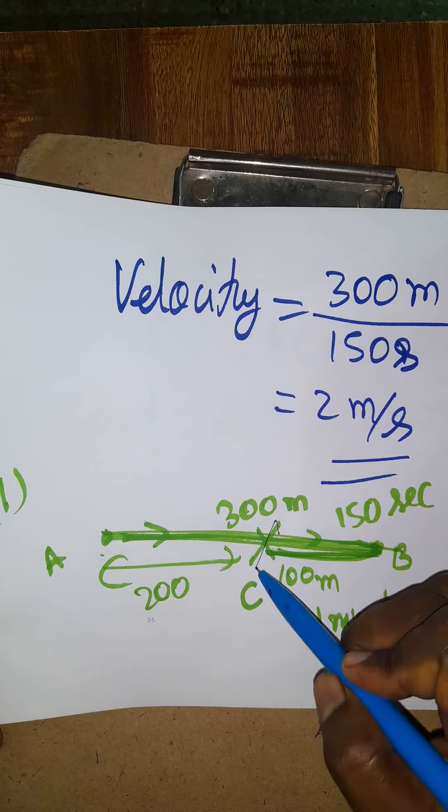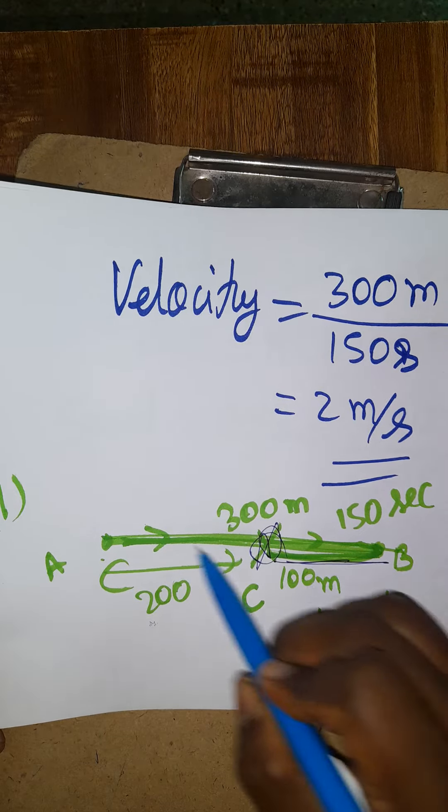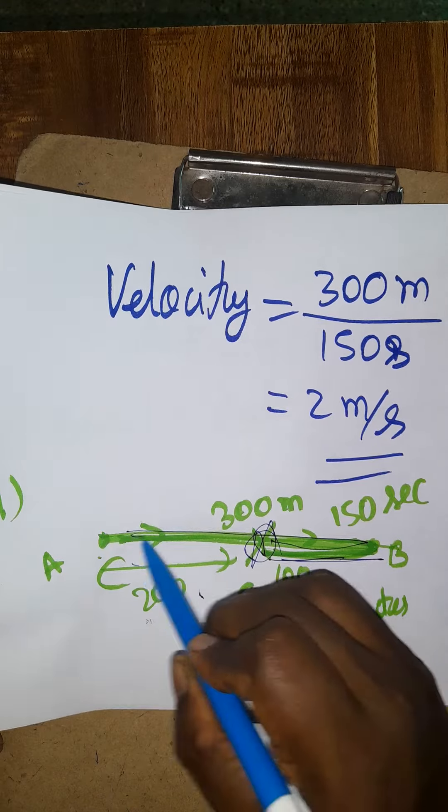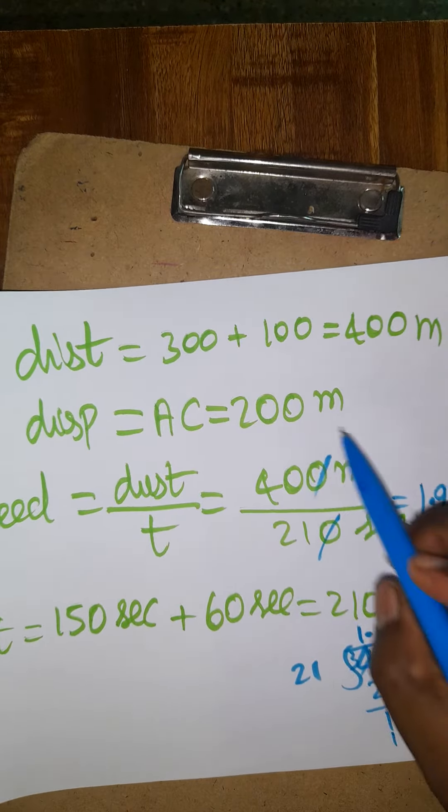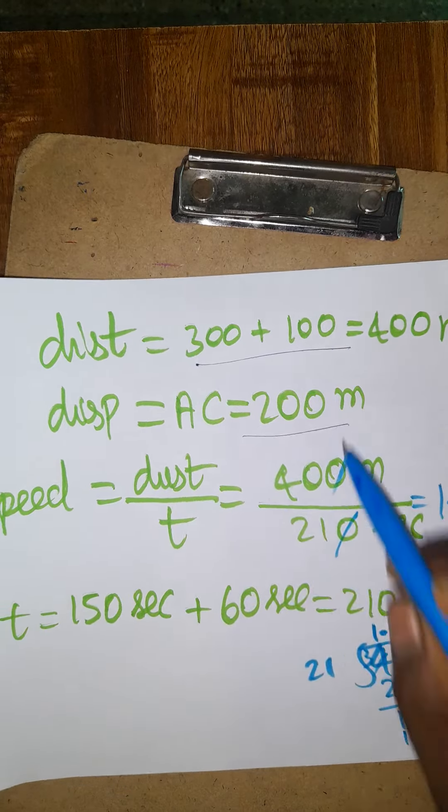Now he comes back to point C, which is 100 meters back. So the total displacement is 200 meters and the distance is 400 meters.